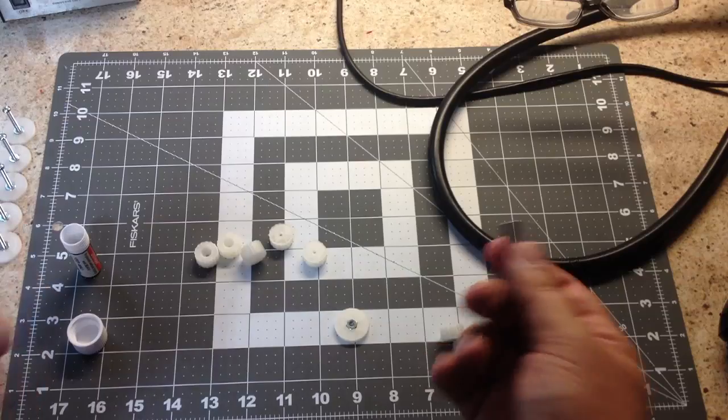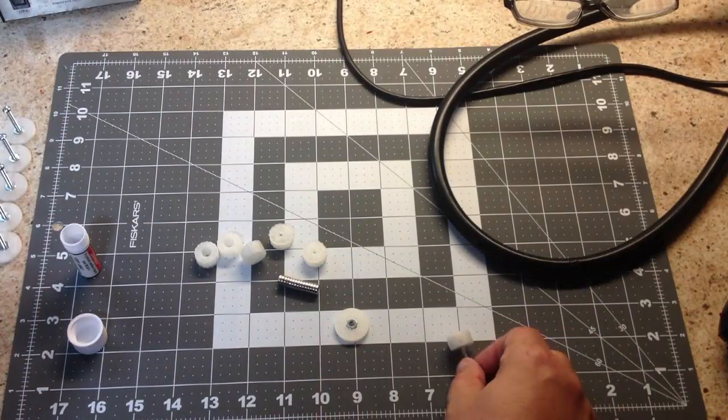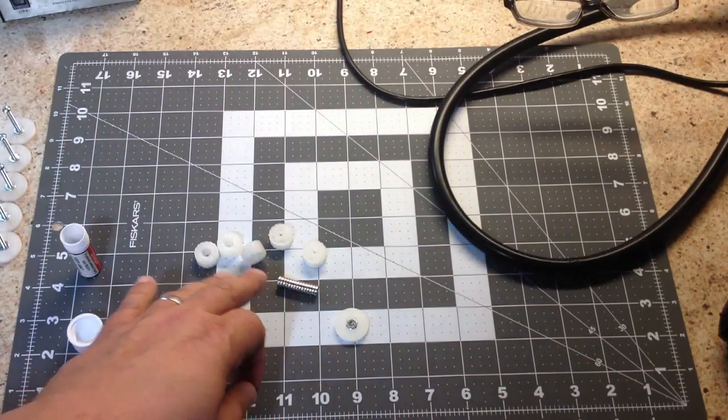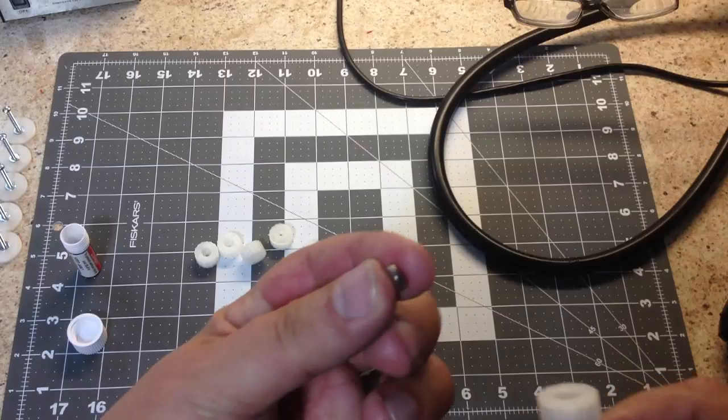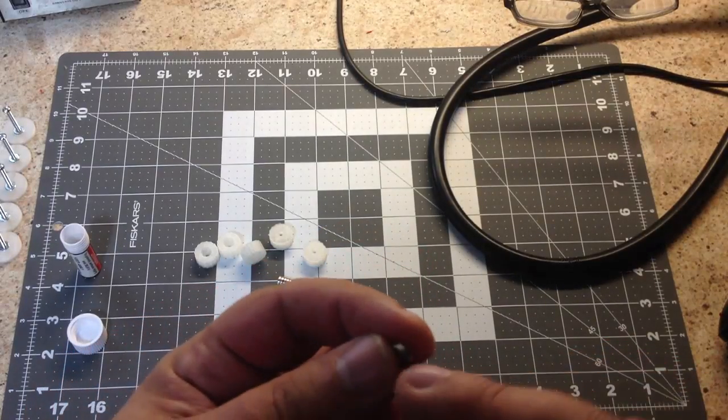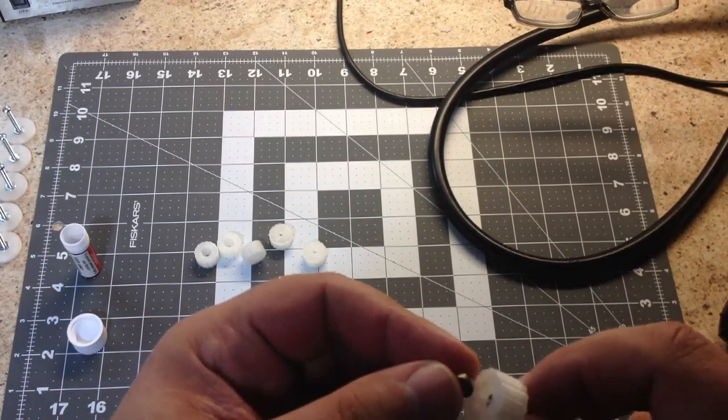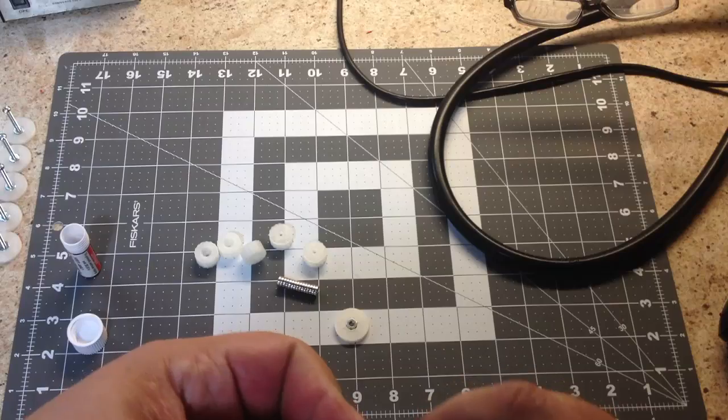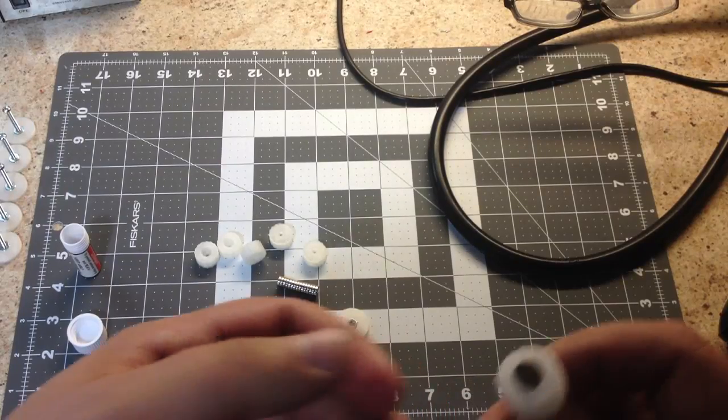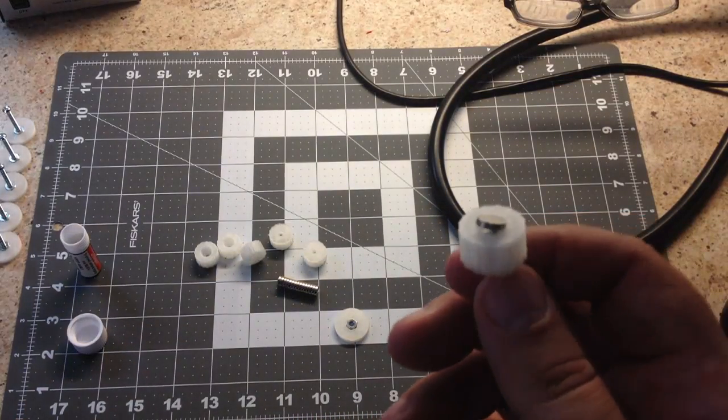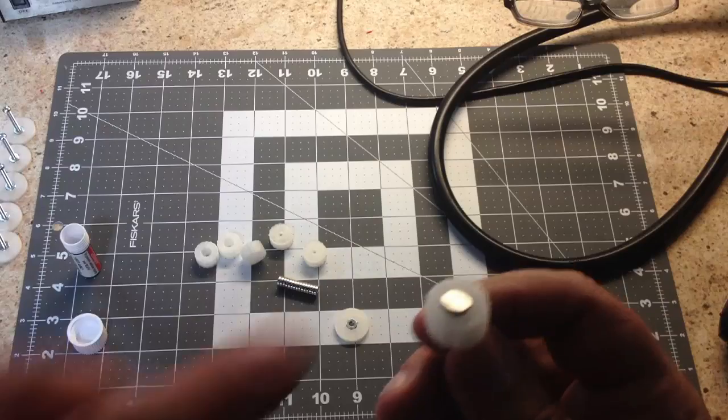They're about two millimeters thick by about five point two. In OpenSCAD I made this opening just a little bit snug for this, and then what you do is insert it there.